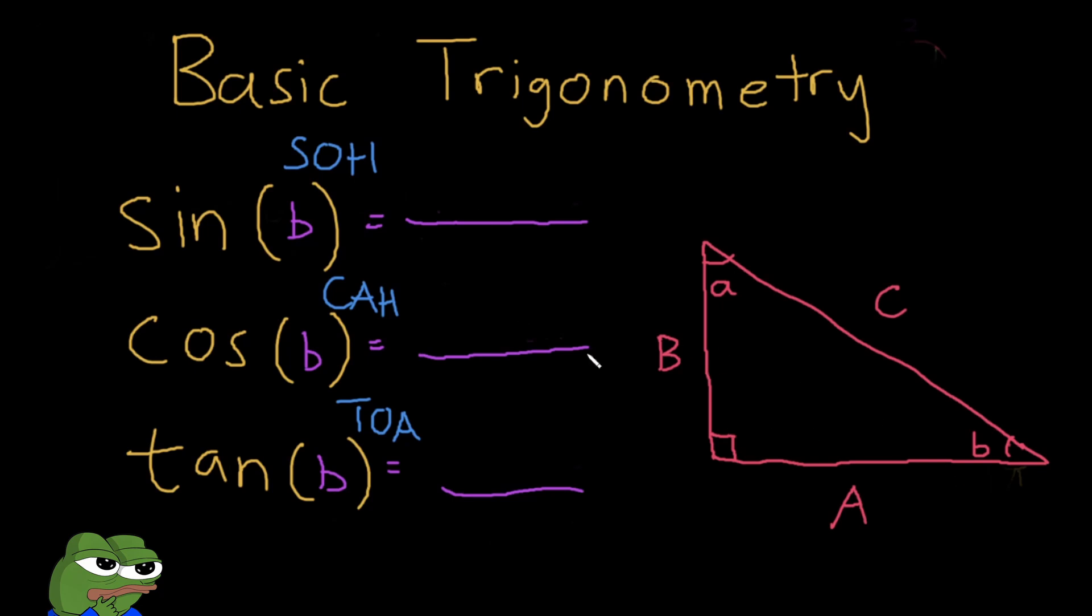What's opposite of angle B? That's just side B over the hypotenuse C. For cosine, the adjacent to angle B is A, so that's side A over hypotenuse C. And finally, for tangent, we have opposite of angle B, which is B, over the adjacent side of angle B, that is A.